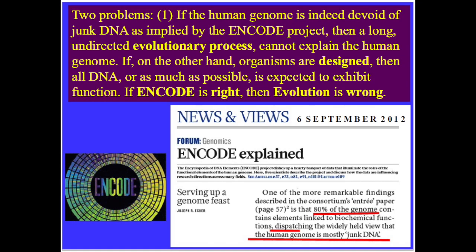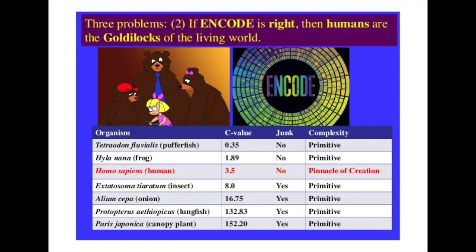Because, as stated by them, if the human genome is indeed devoid of junk DNA, as implied by the ENCODE Project, then a long, undirected evolutionary process cannot explain the human genome.